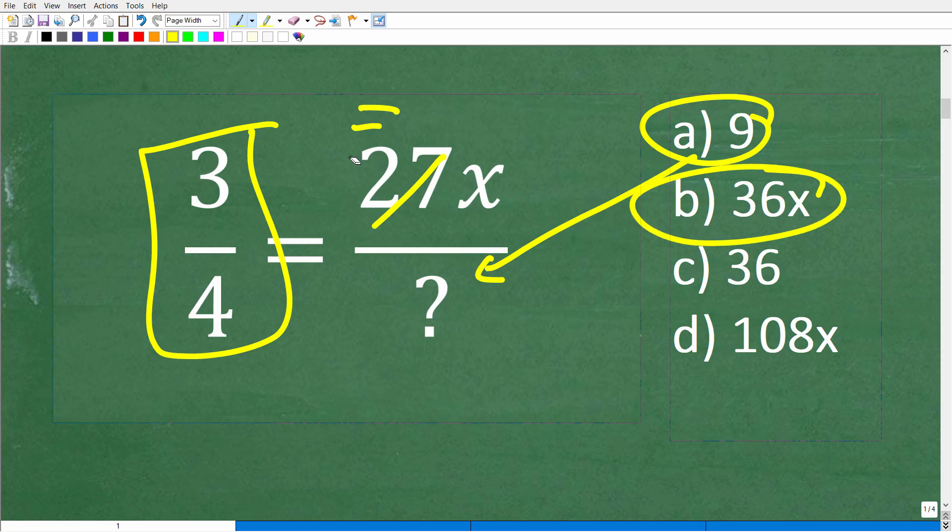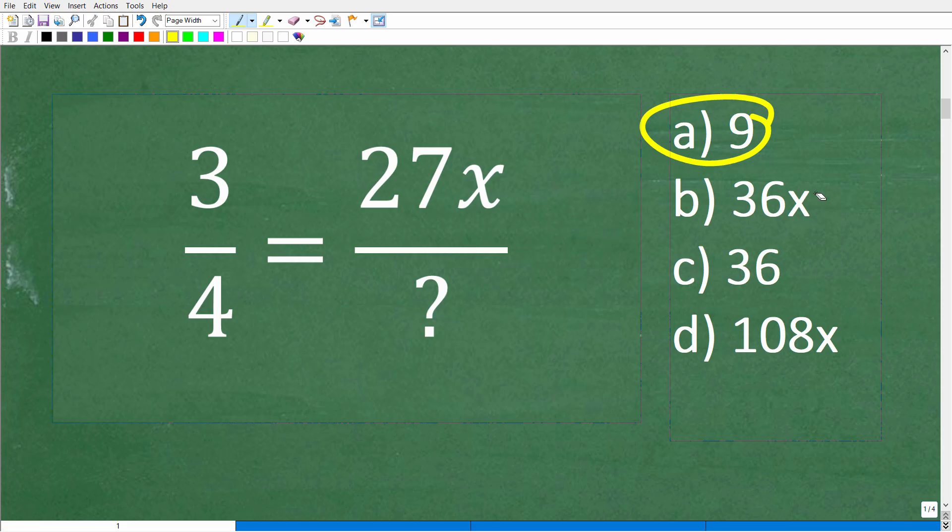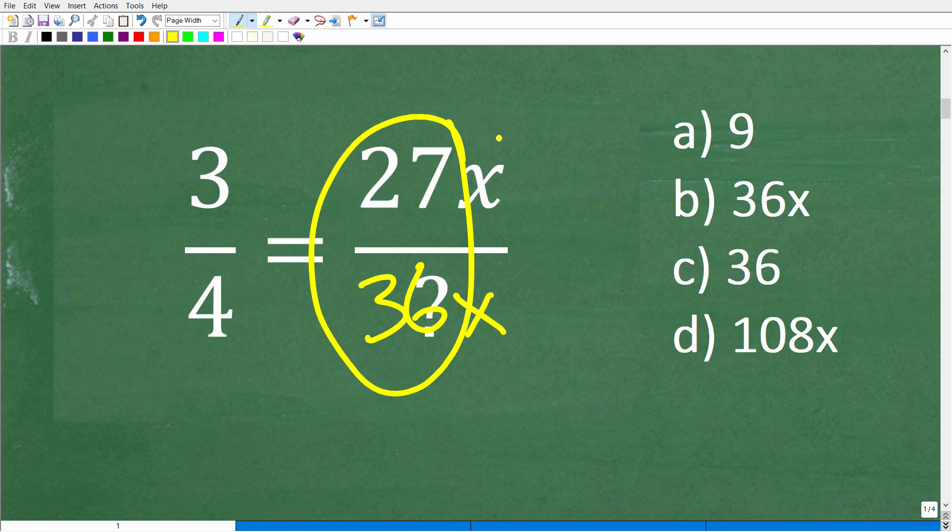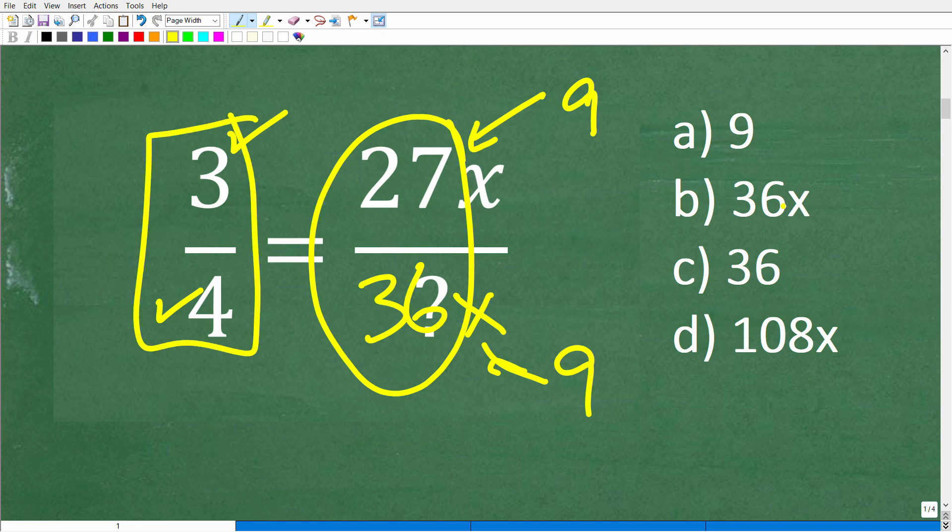A lot of you might say 36x is the obvious answer. I don't know what a proportion is, but 36x is the right answer because 27 over 36, nine goes into 27 three, and nine goes into 36 four. So this fraction reduces down to three-fourths.